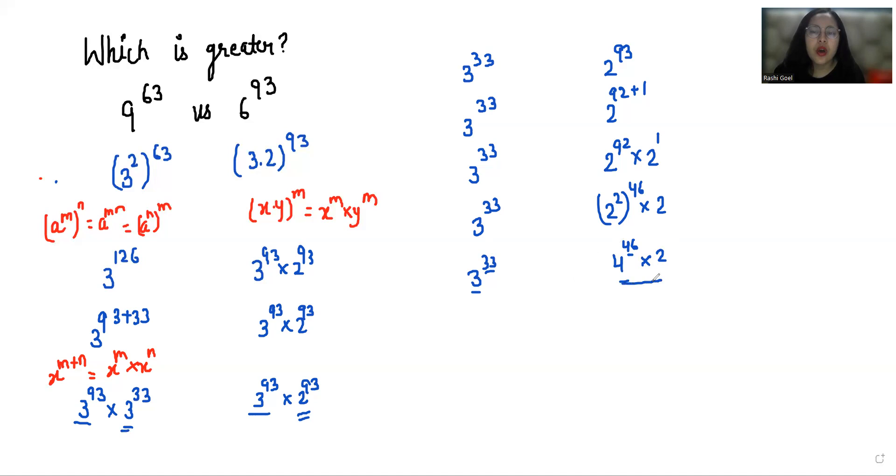So we can simply say that 4 power 46 is greater than 3 power 33. Therefore, we can conclude that 6 power 93 is greater than 9 power 63.